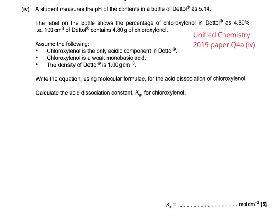So, first of all, let's have a look at what it says about the label on the bottle. It's at 4.8%, meaning that 100 centimeters cubed of Dettol contains 4.8 grams of chloroxylenol. It also shows you the pH right at the very top of the page as 5.14.